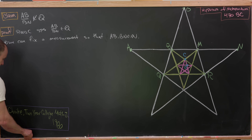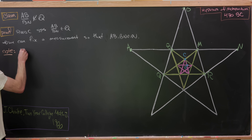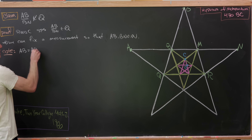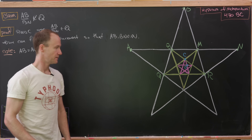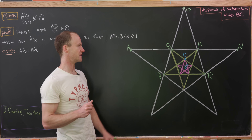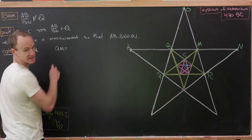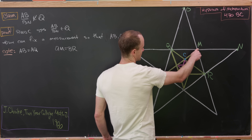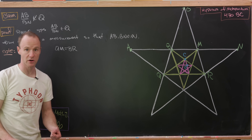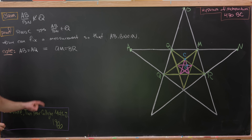Next, let's note a couple of equalities. Notice that AB is the same length as AQ — that's clear because this is a regular pentagram. Furthermore, QM equals BR, since the inner pentagram is also regular. And I'm going to complete this into a string of four equalities by claiming that AQ equals QM.